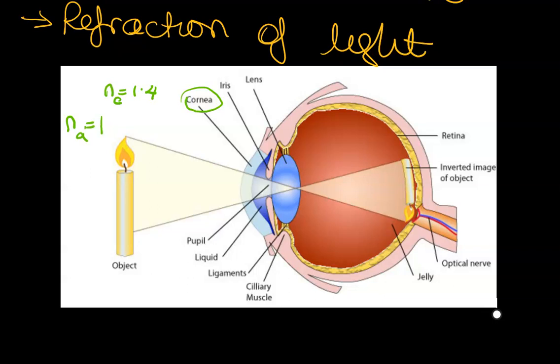It then passes through the aqueous humor, which is you'll see it right here. So they labeled it liquid but it's in fact the aqueous humor, and the aqueous humor basically is a jelly-like layer, it's made mostly water with a few salts dissolved. There is a slight bending there.